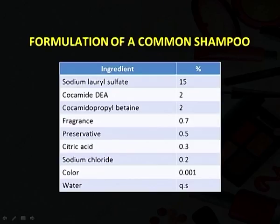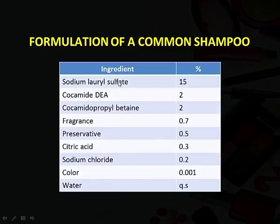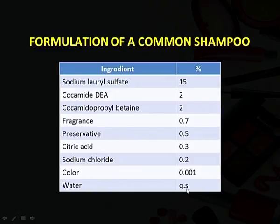This table shows the formulation of a common shampoo. Although different companies have different ratios, a basic shampoo should have sodium lauryl sulfate around 15 percent, then cocamide DEA and cocamidopropyl betaine at 2 percent each, some fragrance, preservatives, citric acid, sodium chloride, color, and the remainder is water. These are the basic requirements for a shampoo.